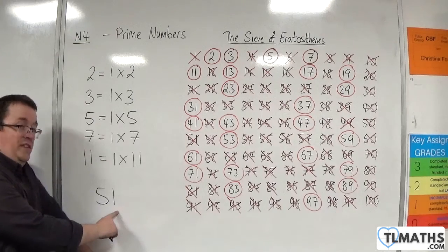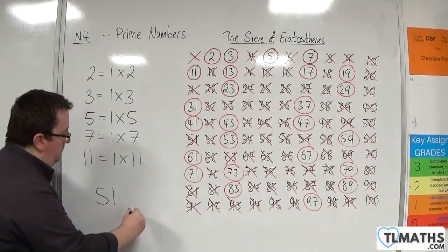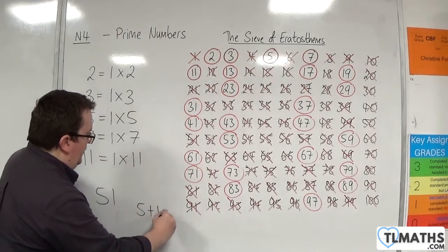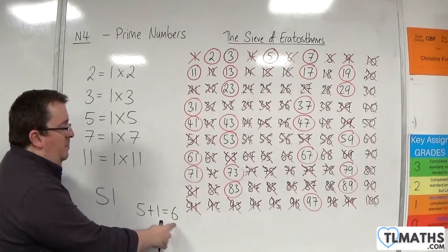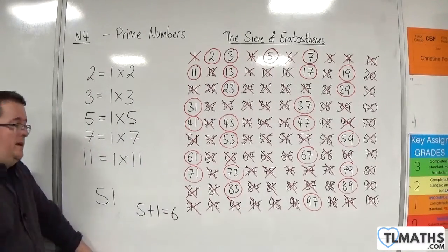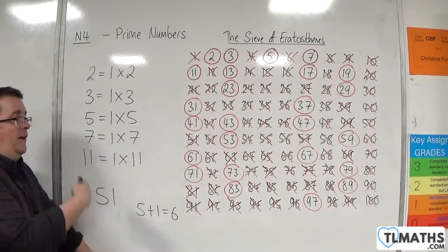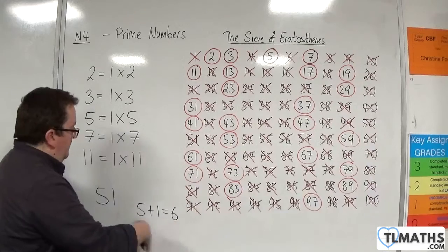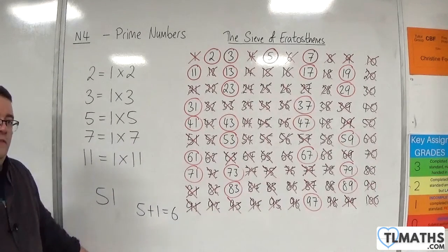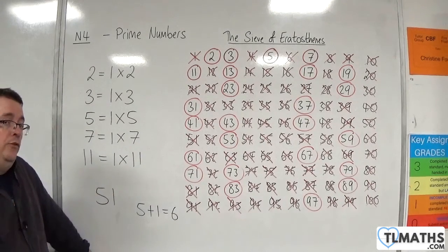So there are little tricks that you can utilize. If you add up the digits, so five plus one and that's six, if that number is divisible by three then this one is divisible by three. So the fact that five and one is six and I know that's divisible by three I know fifty-one is divisible by three. That is a useful little trick.